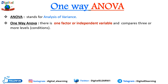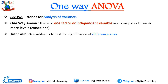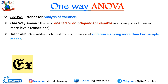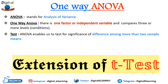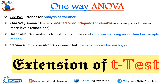ANOVA enables us to test for significance of difference among more than two sample means. It is basically an extension of the t-test. In the t-test we compare two sample means, but what if there are more than two samples? For that we have one-way ANOVA.